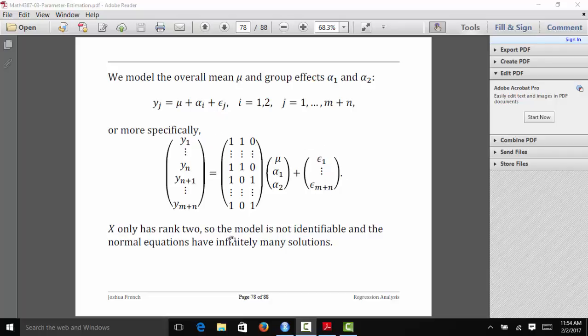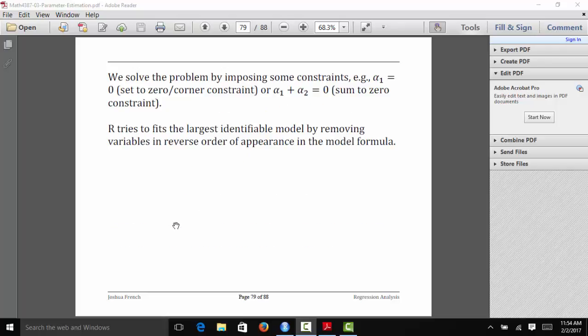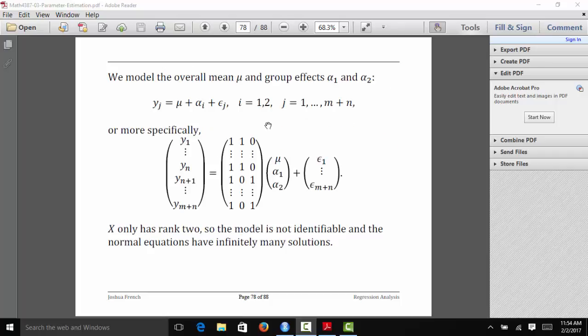If you look closely at this formula, you've realized that the column of ones is just a linear combination of those two columns. It's just the sum of them. So we have a problem with linear dependence. X only has rank 2. Our model is not identifiable, and our normal equations would have infinitely many solutions. This is a problem for experimental data, but not so much for observational data. In this case, we actually just wouldn't need this last column most likely.